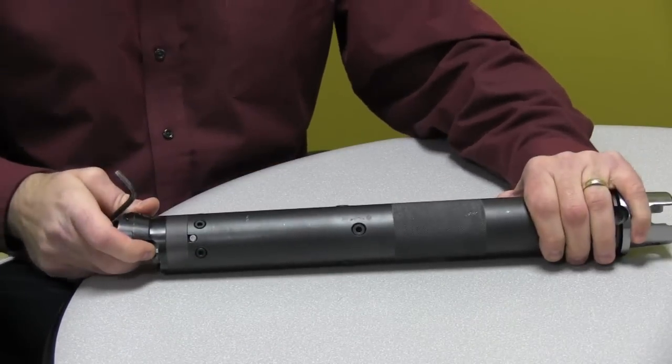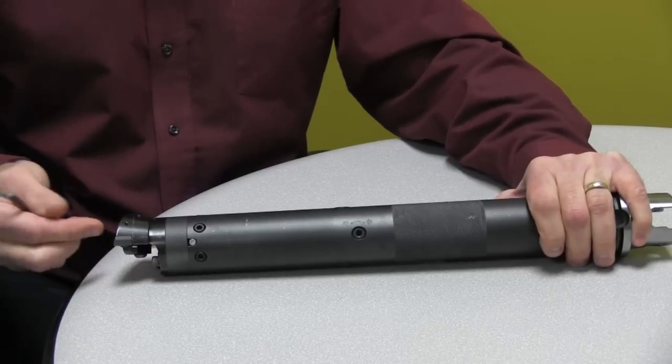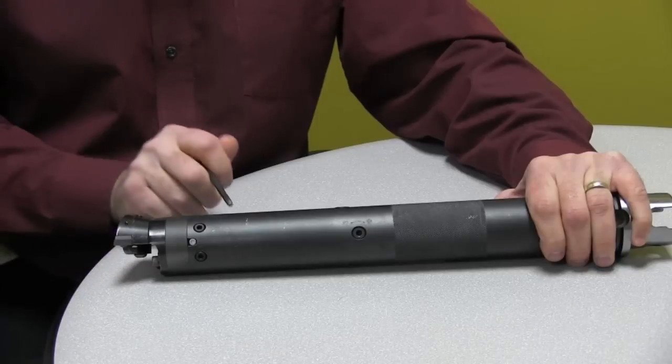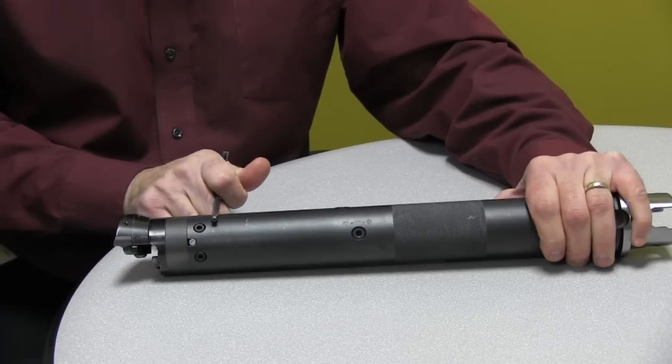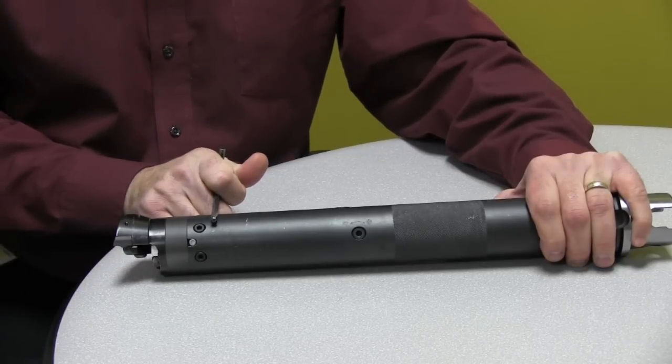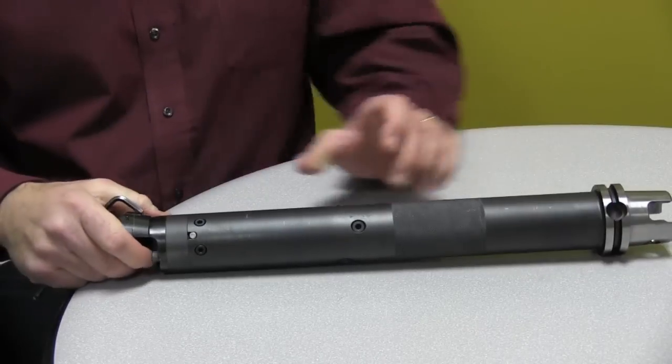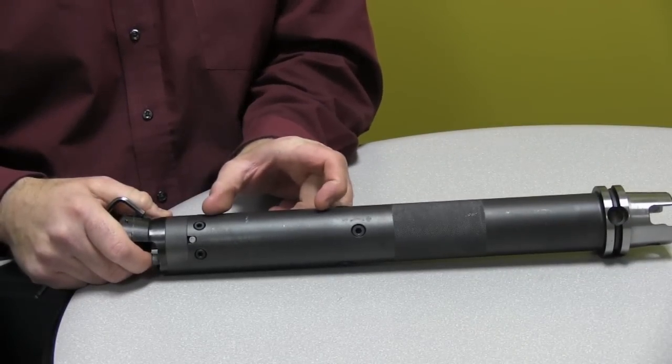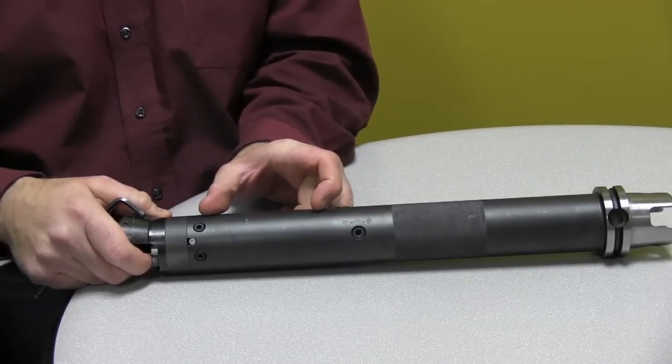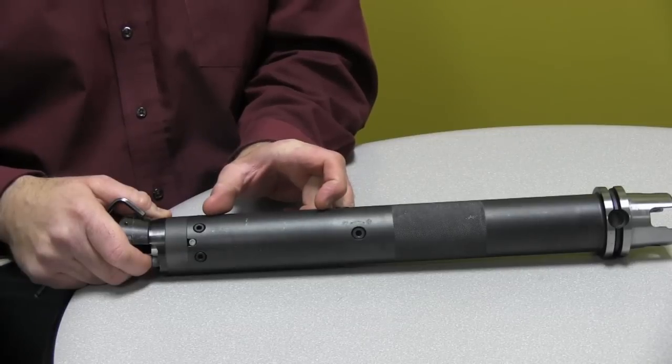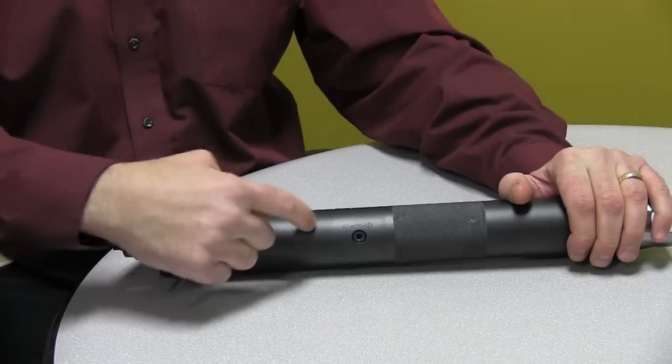Now at this time, we want to take a dead blow hammer, some sort of soft mallet hammer, about an inch or two down from the head of the bar. Give it a couple taps, and what that does is that sets this mechanism inside the bar. It centers it and makes sure it's in the right location so everything works correctly.